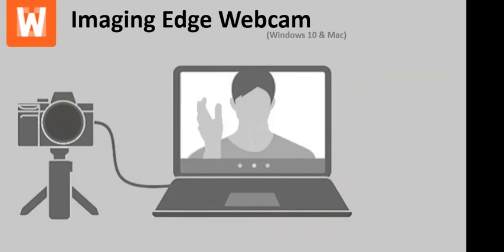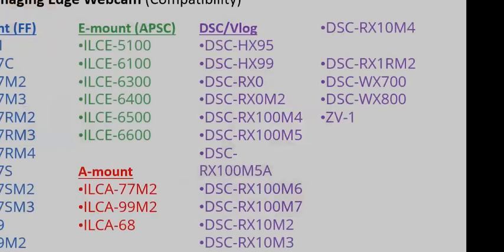Sony now has a utility called Imaging Edge Webcam — it's free software that lets you use almost all Sony cameras as a webcam. You can go to sony.com and search for Imaging Edge Webcam. They added many more cameras than I was expecting — even the a5100 is on there. The ZV-1 and ZV-E10 actually have a slightly different version built into the camera that works a little better, but on all other supported cameras you're able to use this utility to use your Sony camera as a webcam.